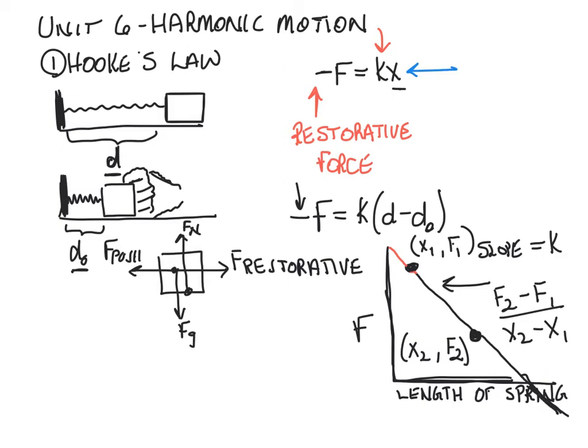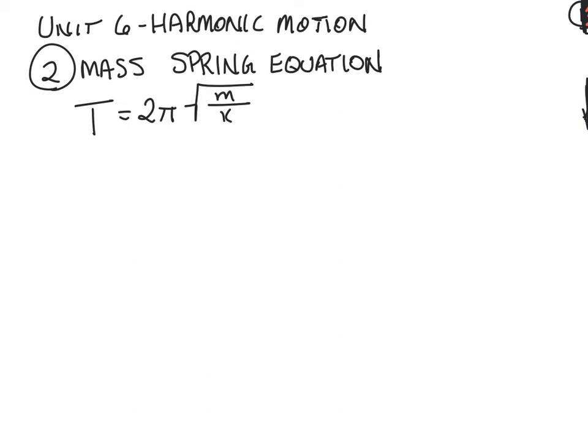The second topic that we cover in harmonic motion is the mass spring equation. It looks like this. T is equal to 2 pi times the square root of the mass, mass given in kilograms, over the spring constant k. T refers to the period of motion.